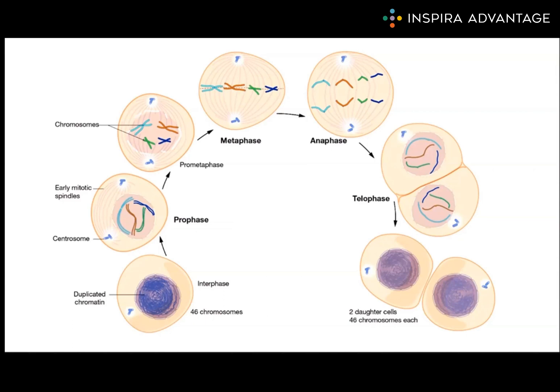During anaphase, the third stage of mitosis, the chromatids are separated and begin to move to opposite poles of the cell. This is done by the action of the mitotic spindle, which pulls the chromatids towards the poles. As the chromatids move towards the poles, the cell becomes longer and more narrow.